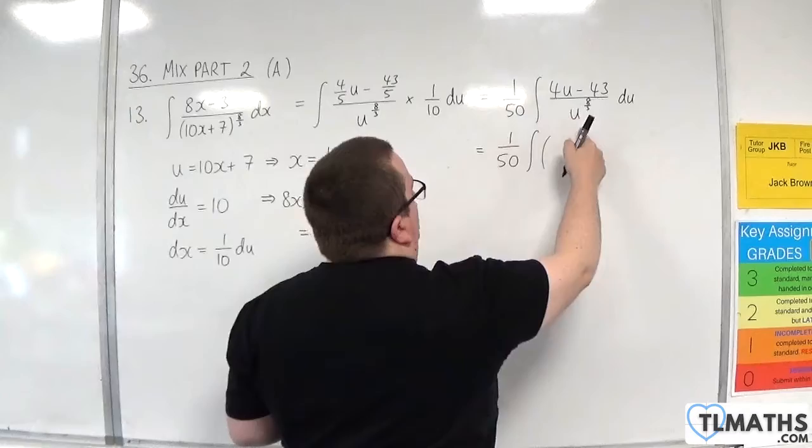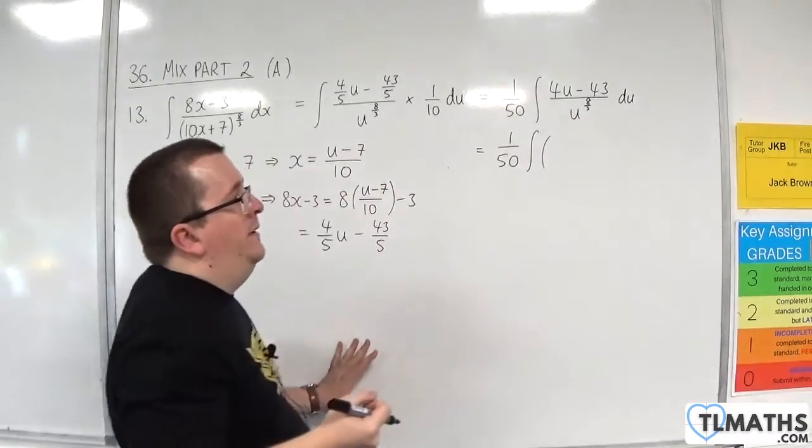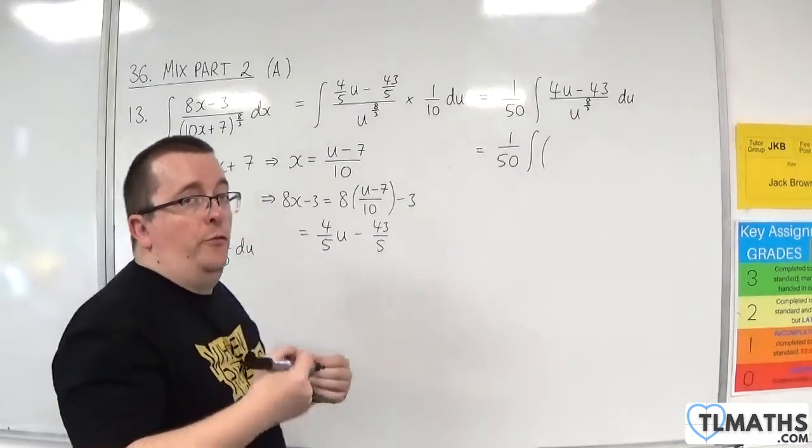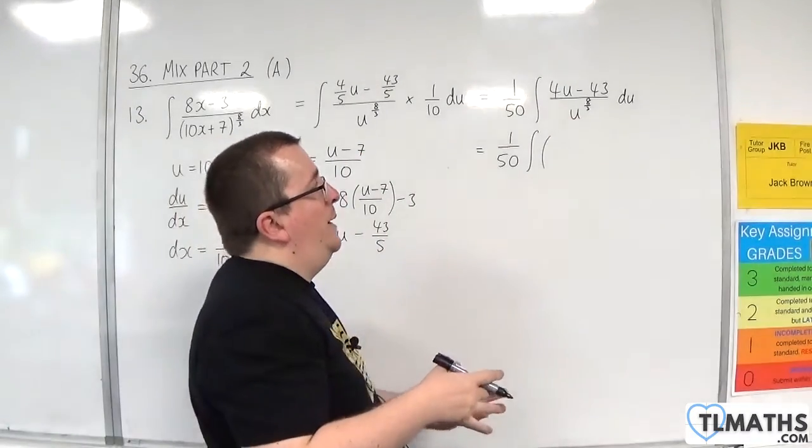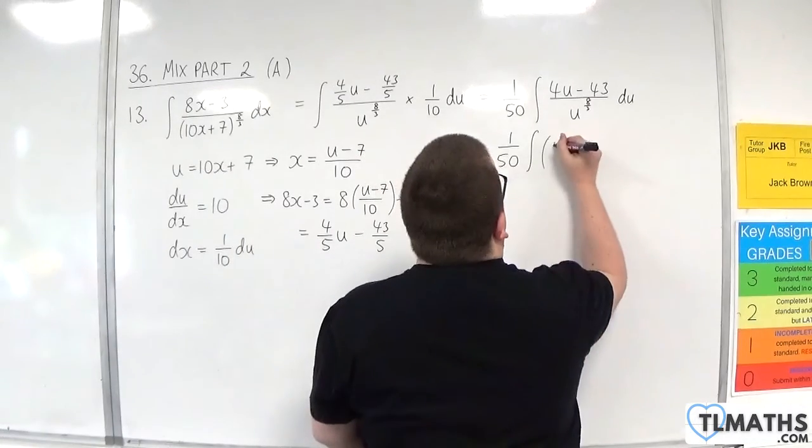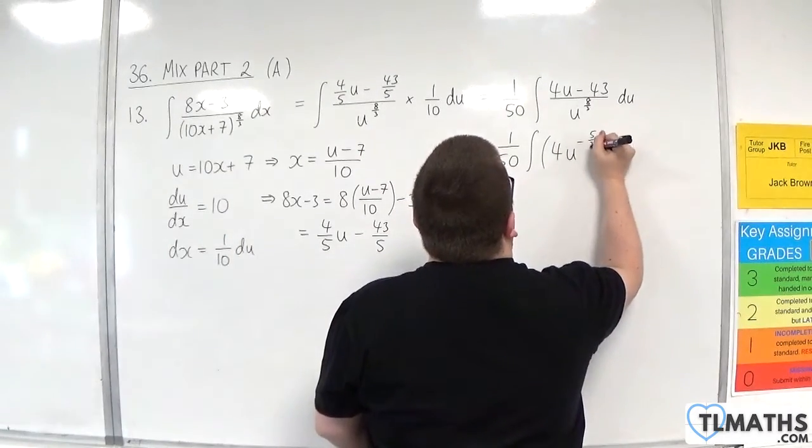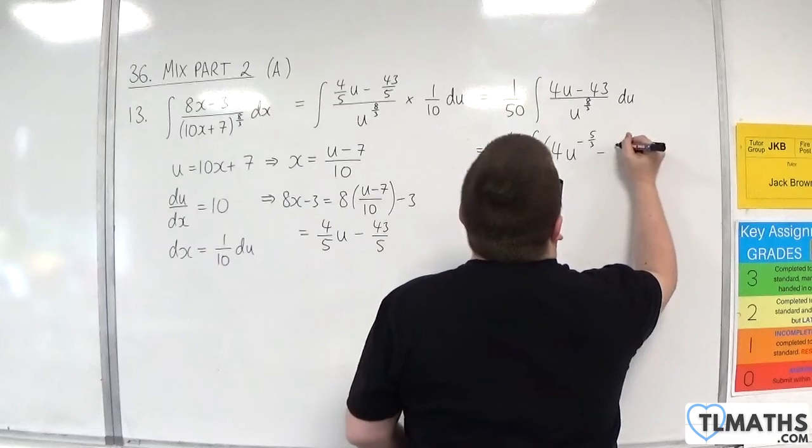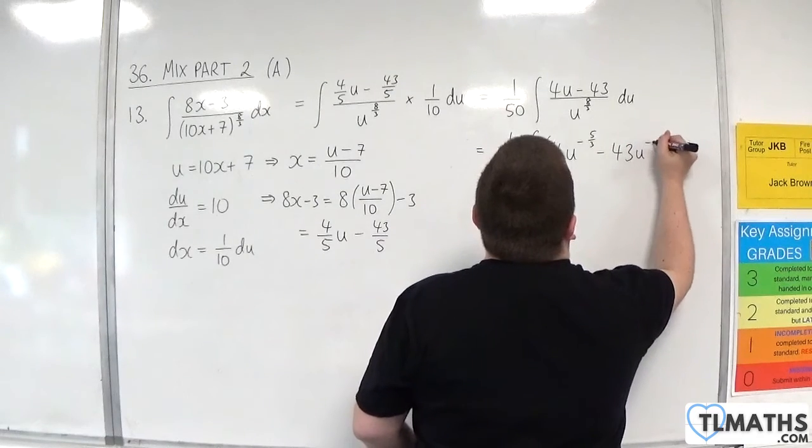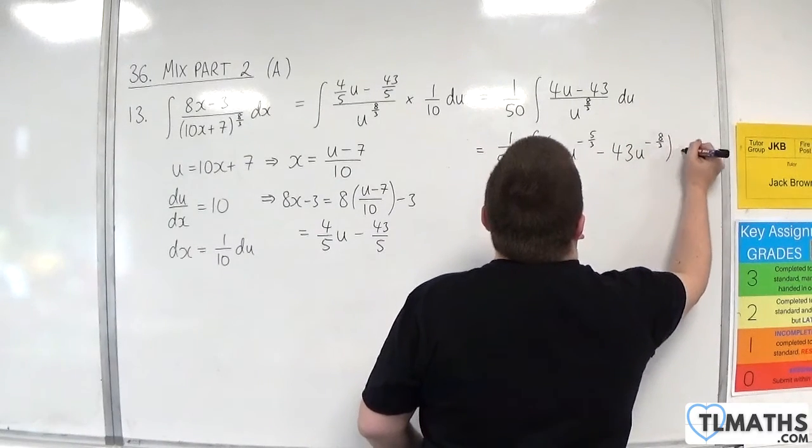So we'll have 4u divided by u to the 8 thirds. Now that's u to the 1, which is 3 thirds. 3 thirds take away 8 thirds is minus 5 thirds. So 4u to the minus 5 thirds, and then we'll have take away 43u to the minus 8 thirds du.